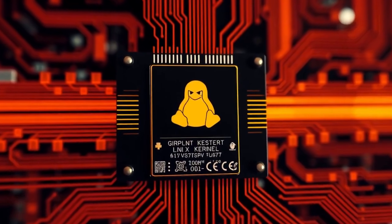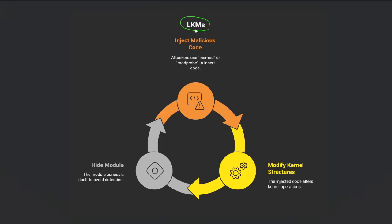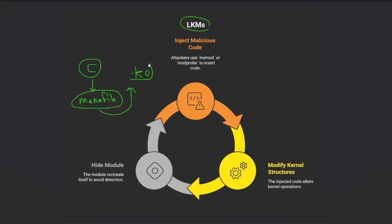Now let's discuss LKMs — Loadable Kernel Modules — the most popular type of Linux kernel backdoors. The attacker first creates a backdoor written in C language, then creates a Makefile. The C file and Makefile together compile into a file with the .ko extension — that's the kernel module. The attacker loads this module into the target system using commands like insmod or modprobe. Once loaded, the module can make system calls and modify the kernel structure. Afterward, the attacker can create a script to trigger or interact with the module.